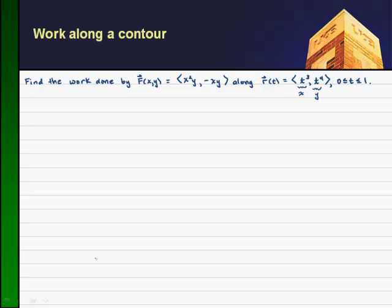So if you recall, this is x and this is y, and we're trying to look along some contour. The position vector r of t would trace all along this contour of c, if you will. So let's find the work done by this force going along that contour.